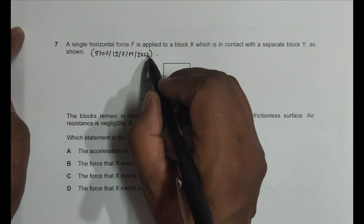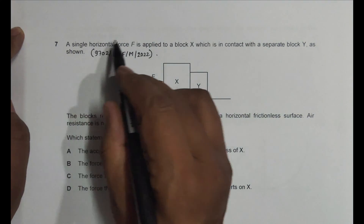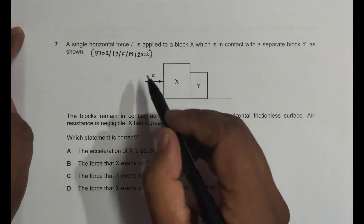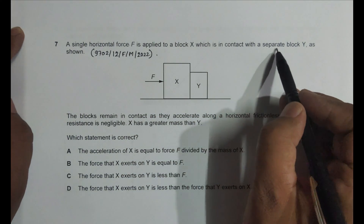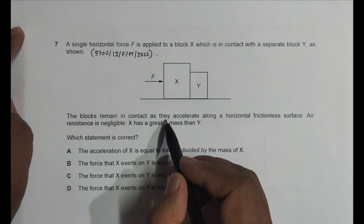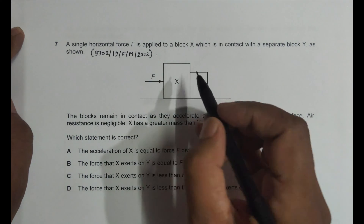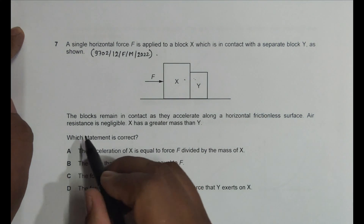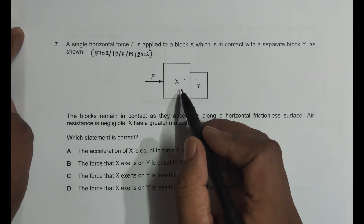This is the 2022 February/March session, Paper 1 and 2, Question 7. This question is concerned with the chapter of forces, or dynamics. It shows a single horizontal force F applied to a block X which is in contact with a separate block Y. The blocks remain in contact as they accelerate along a horizontal frictionless surface, with air resistance negligible. The mass of X is greater than Y.